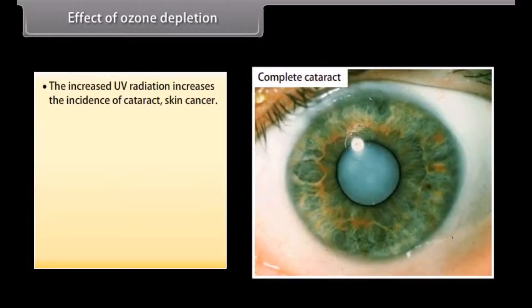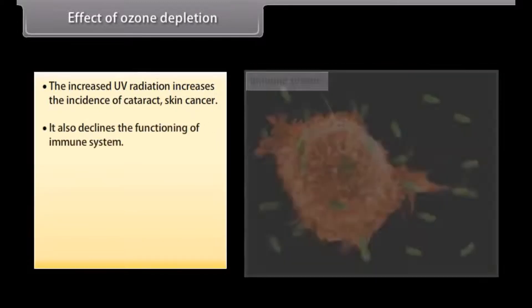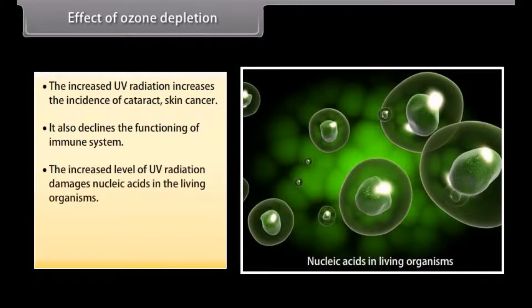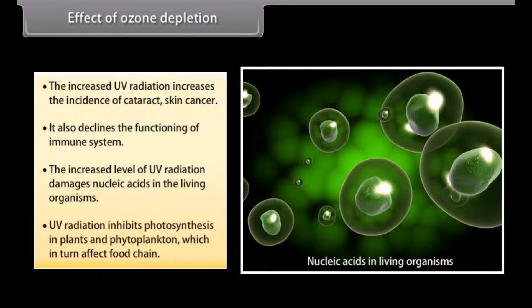Effects of ozone depletion: increased UV radiation increases the incidence of cataracts and skin cancer, and also declines the functioning of the immune system. The increased level of UV radiation damages nucleic acids in living organisms. UV radiation inhibits photosynthesis in plants and phytoplankton, which in turn affects the food chain.